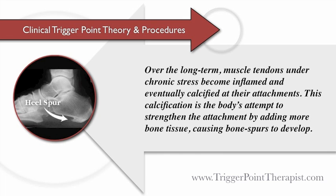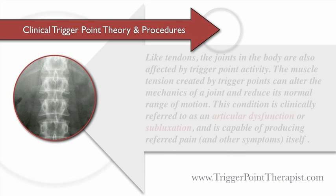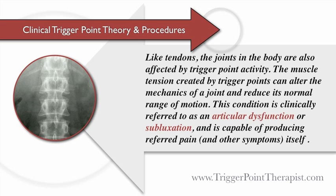Over the long-term, muscle tendons under chronic stress become inflamed and eventually calcified at their attachments. This calcification is the body's attempt to strengthen the attachment by adding more bone tissue, causing bone spurs to develop. Like tendons, the joints in the body are also affected by trigger point activity. The muscle tension created by trigger points can alter the mechanics of a joint and reduce its normal range of motion. This condition is clinically referred to as an articular dysfunction or a subluxation and is capable of producing referred pain and other symptoms itself.